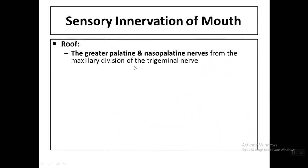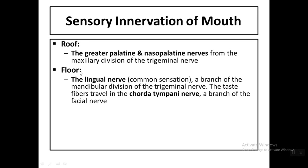What is the sensory innervation of the mouth? The roof — formed by the hard and soft palate — is supplied by branches of the maxillary nerve: the greater palatine and the nasopalatine nerves, which are branches of the maxillary division of the trigeminal nerve. The floor of the mouth is supplied by the lingual nerve for common sensation — pain, temperature, and touch.